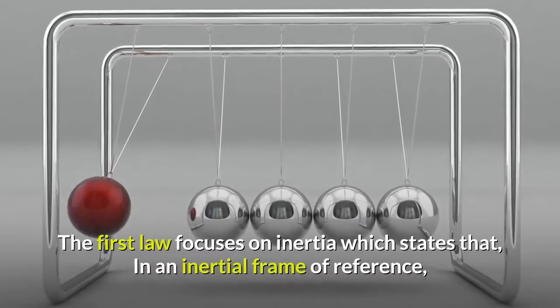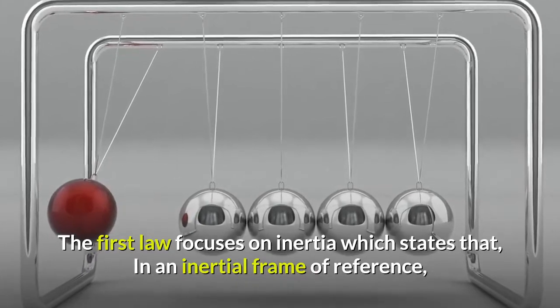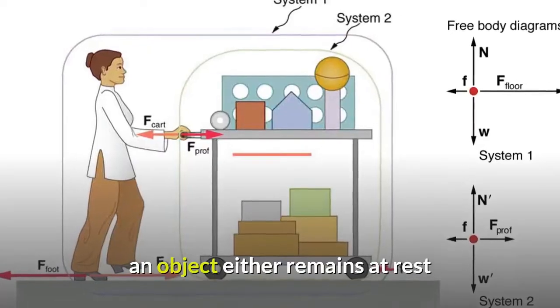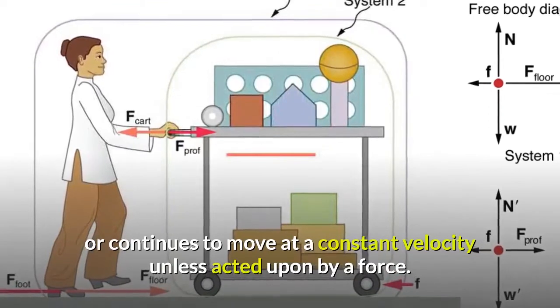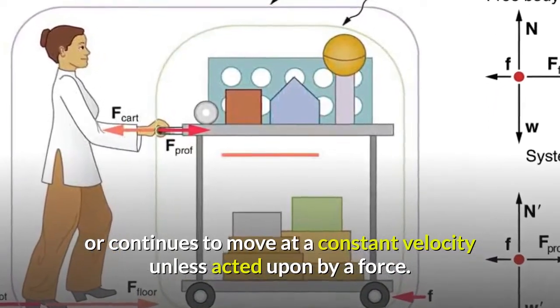The first law focuses on inertia, which states that in an inertial frame of reference, an object either remains at rest or continues to move at a constant velocity unless acted upon by a force.